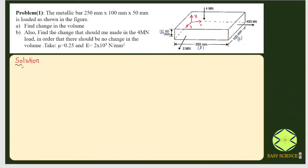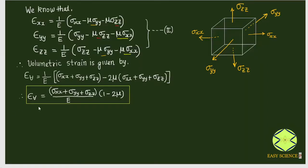Looking at the solution, first we have to find the change in volume. Using the formula we derived, the change in volume is given by the stresses in x, y, and z directions divided by E times (1 − 2μ). We have the values of E and μ, so we need to find stresses in x, y, and z direction.